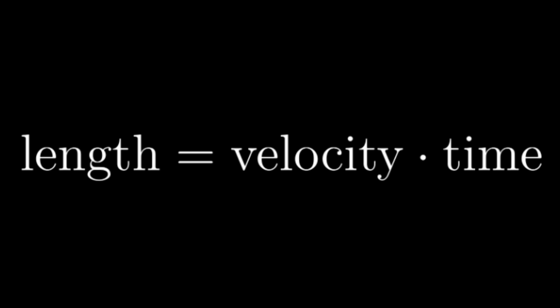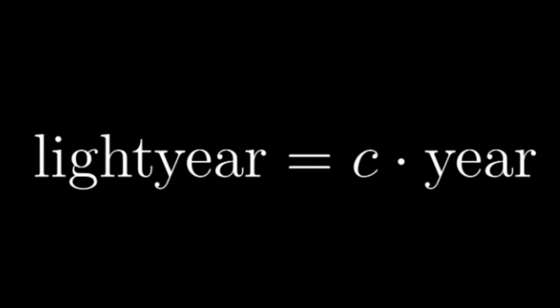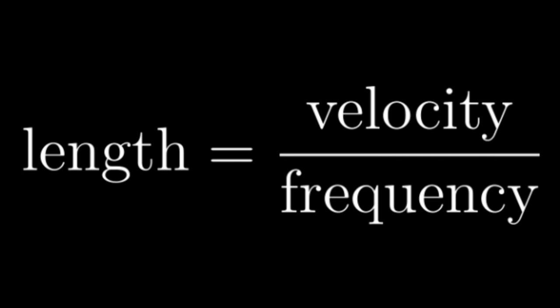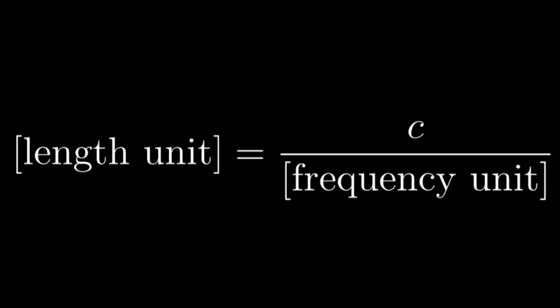Of course, no system of measurement is complete without a unit of length. It makes sense to derive a unit of length from the speed of light. You can do this by multiplying it by some unit of time. For example, the speed of light times one year is a unit of length called a light year. We could do that, but that's kind of boring. Instead, we can generate the unit of length by dividing the speed of light by a unit of frequency, that unit of frequency being our third fundamental base unit.